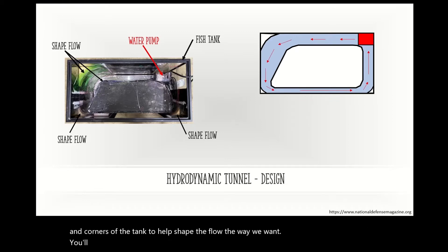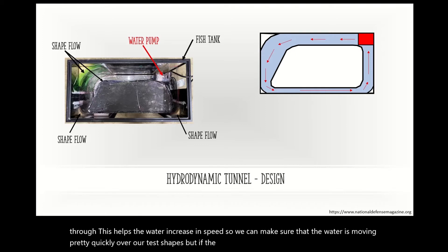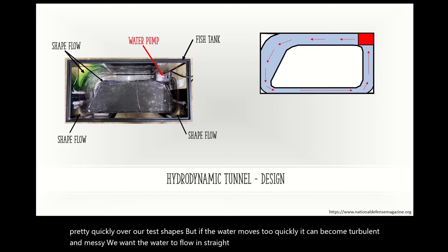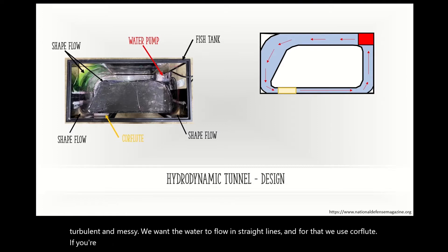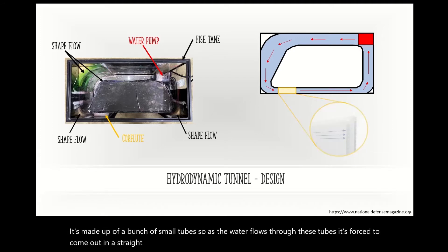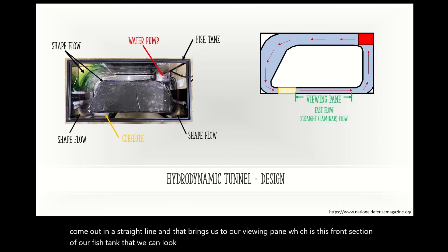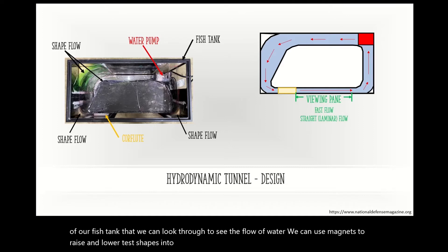You'll notice this front area of the tank has a much smaller space for the water to flow through. This helps the water increase in speed so we can make sure that the water is moving pretty quickly over our test shapes, but if the water moves too quickly, it can become turbulent and messy. We want the water to flow in straight lines, and for that we use core flute — it's made up of a bunch of small tubes, so as the water flows through these tubes, it's forced to come out in a straight line. That brings us to our viewing pane, which is the front section of our fish tank that we can look through to see the flow of water. We can use magnets to raise and lower test shapes into this front viewing pane to study the changes in the flow.